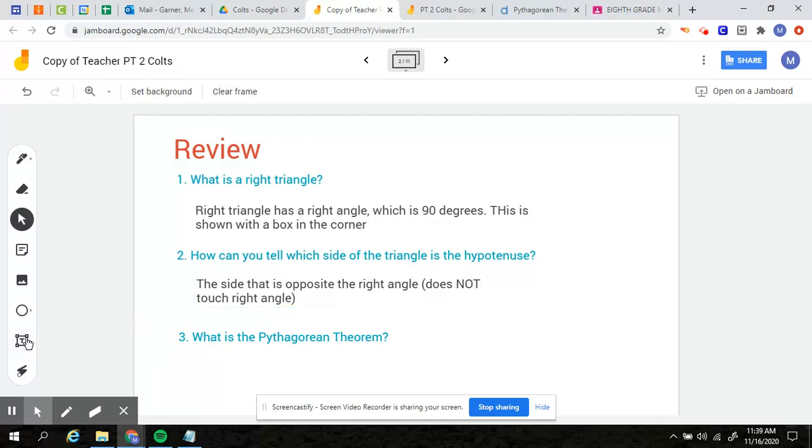And then the third one, what is the Pythagorean Theorem? So just a reminder, the Pythagorean Theorem says A squared plus B squared equals C squared. So your leg squared plus your other leg squared equals your hypotenuse squared. So that's a review from last week. Those are three major things you should have taken away.